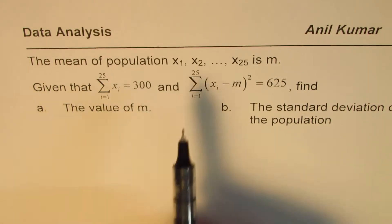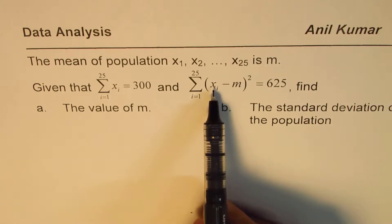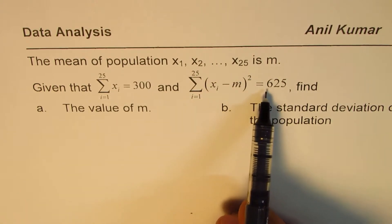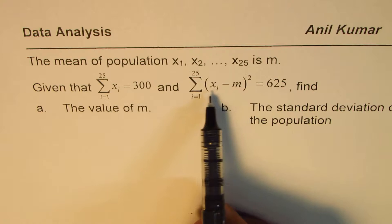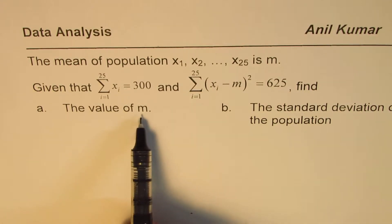And the sum of the square of the difference between mean and each element for 21 of such elements is 625. So the square of this variance, the sum of that is 625.